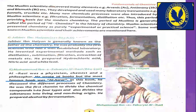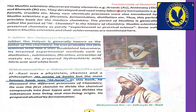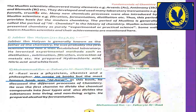The Muslim scientists discovered many elements — for example, arsenic (symbol: As), antimony (symbol: Sb), and bismuth (symbol: Bi). Since this is your first exposure to chemistry, note that these symbols written in brackets next to element names are their chemical symbols, which are sometimes based on the element's English name and sometimes on its Latin name.